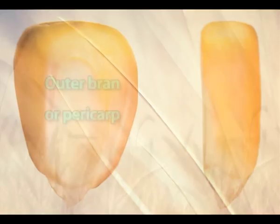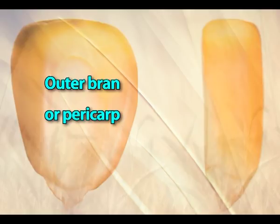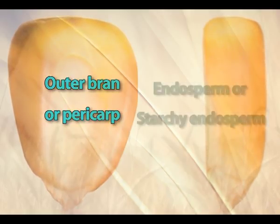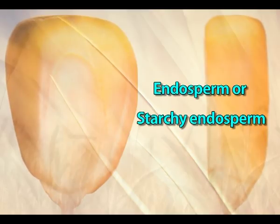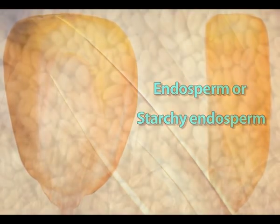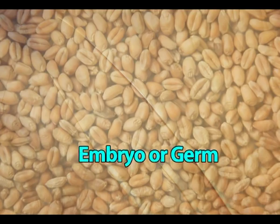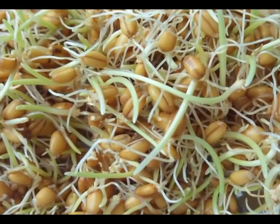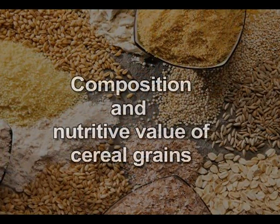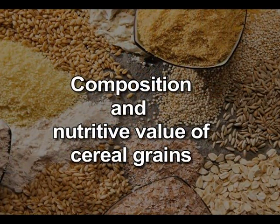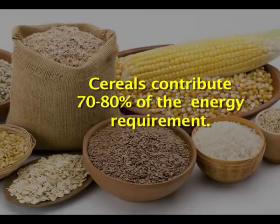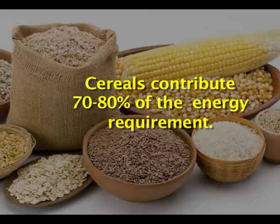Thus broadly the cereal grain can be divided into three parts: the outer bran or pericarp, which is sometimes removed while preparing white flour; the inner endosperm or starchy endosperm, which contributes to the bulk of the flour; and in one corner of the grain is the embryo or germ, which contributes to the new plant during sprouting. Cereals are a very good source of energy, contributing to 70 to 80 percent of our energy requirement.